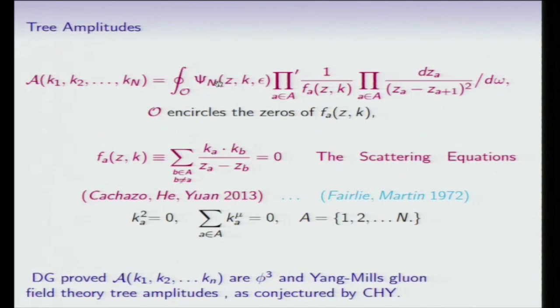So it turns out that these equations apparently first appeared in the literature in 1972, and have subsequently appeared in various contexts by Gross and Mende, by Witten, and various others. So our work gives a proof that the amplitudes derived here are, in fact, those of phi-cubed theory and Yang-Mills theory.